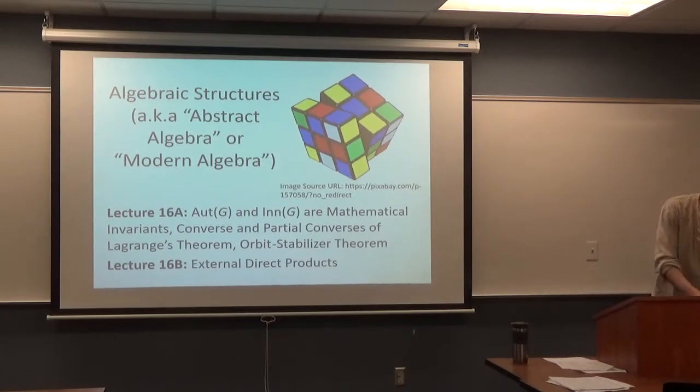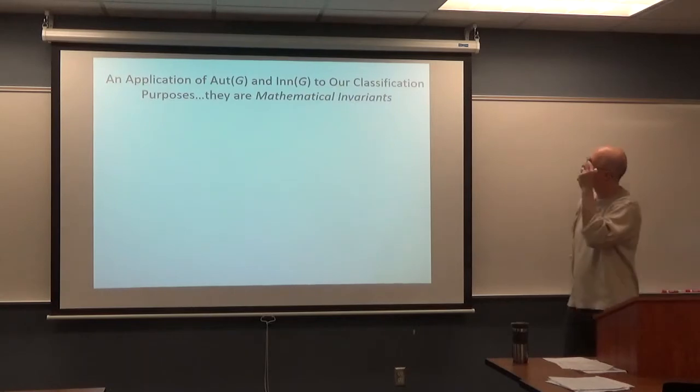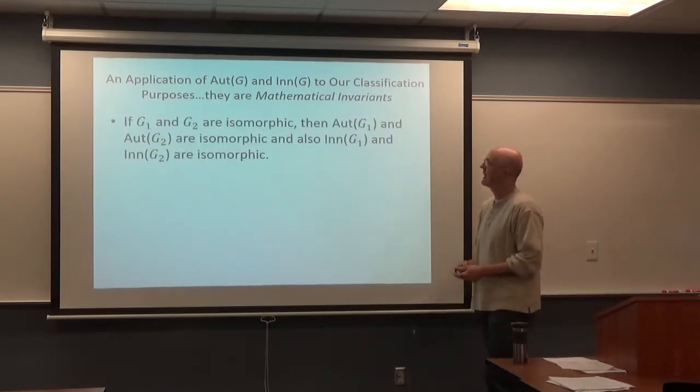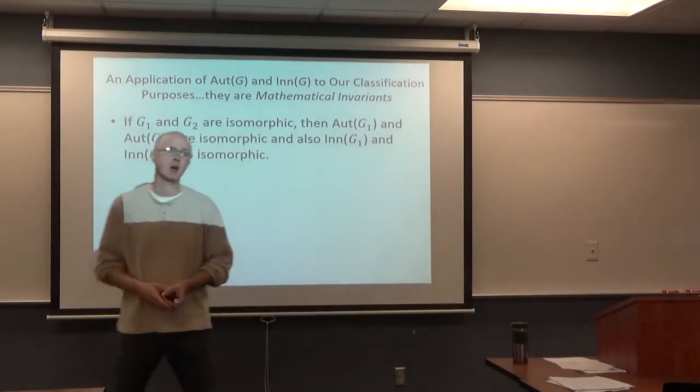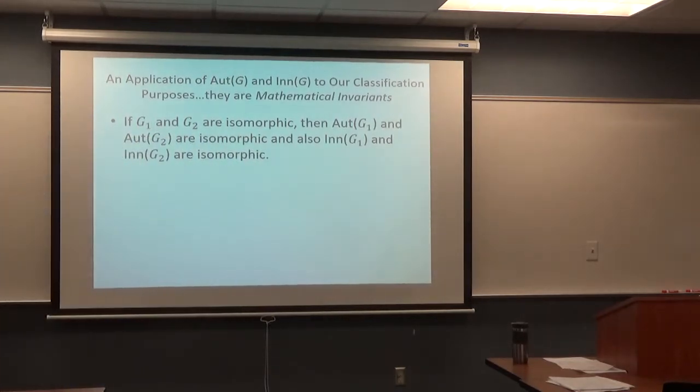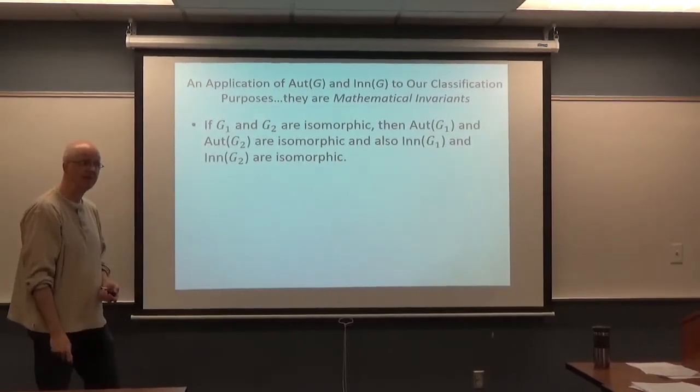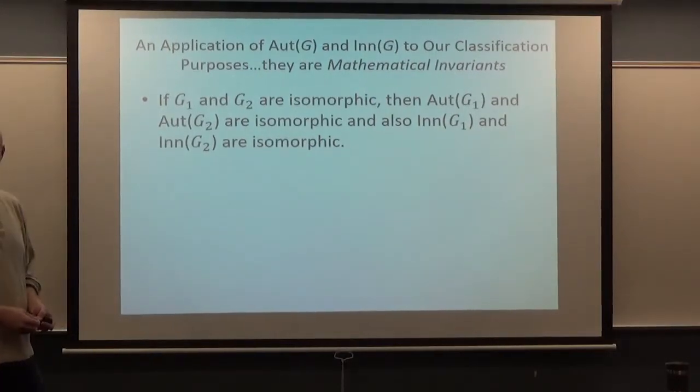All right, so what does it mean to be a mathematical invariant? By the way, you can think of this as really being an application of Aut(G) and Inn(G), at least to our classification purposes. They are mathematical invariants. What does that mean? Well, in this context it means if you've got two groups, G1 and G2, that are isomorphic, then both Aut(G1) and Aut(G2) are isomorphic as well, and Inn(G1) and Inn(G2) are isomorphic.